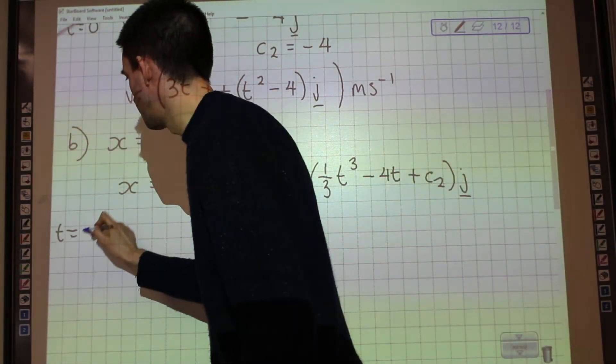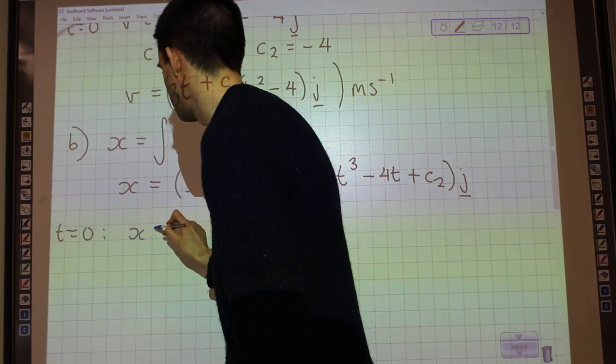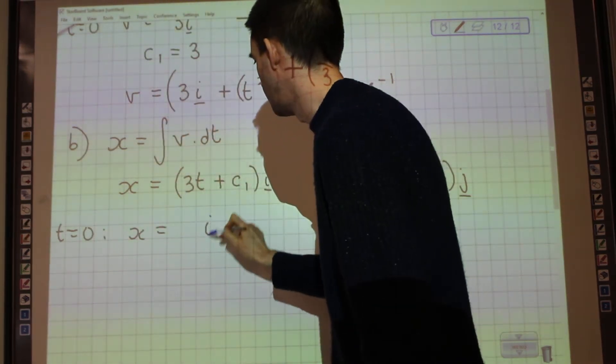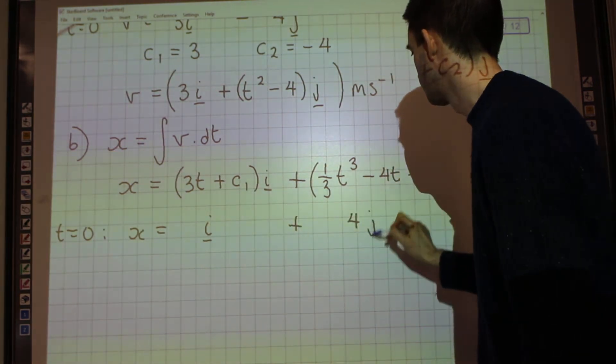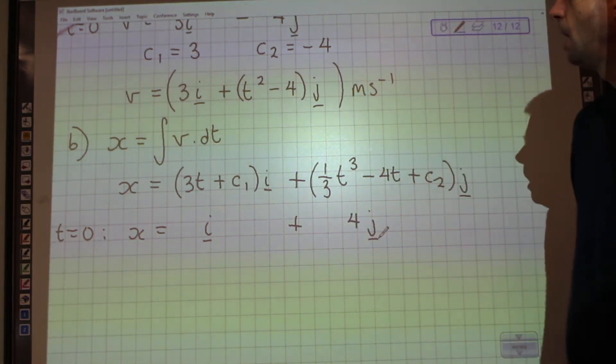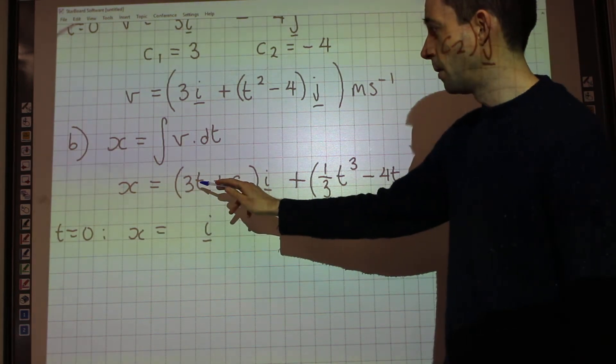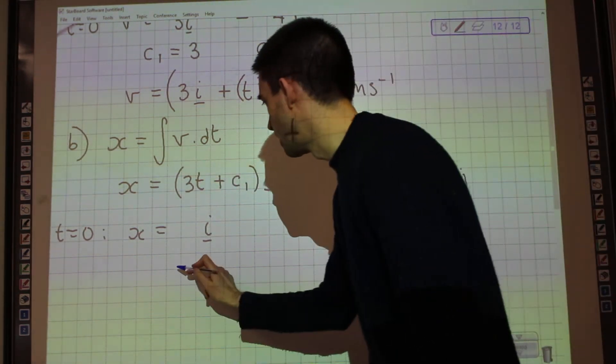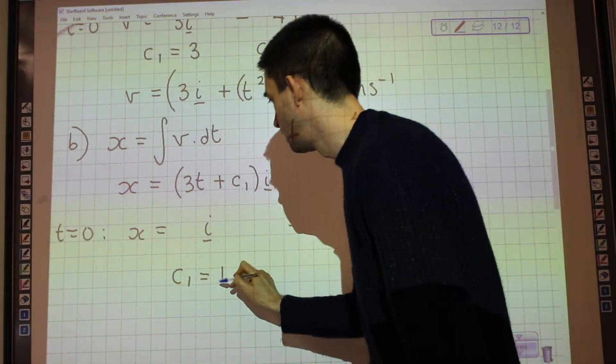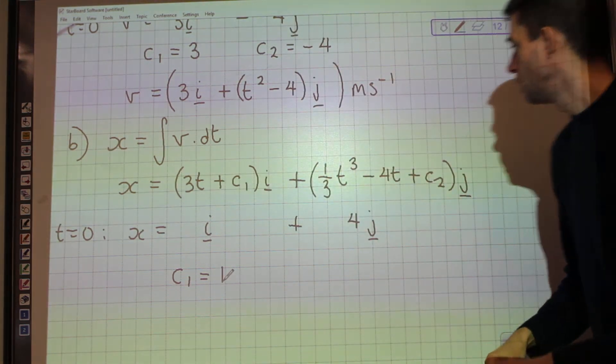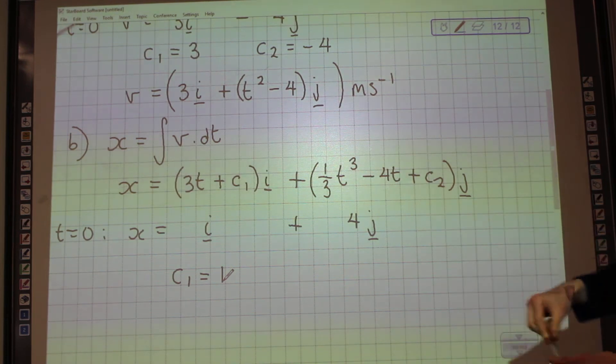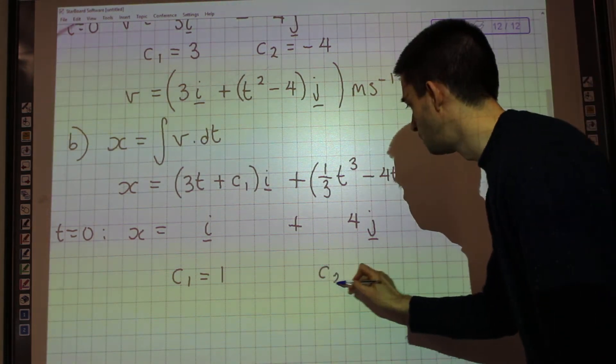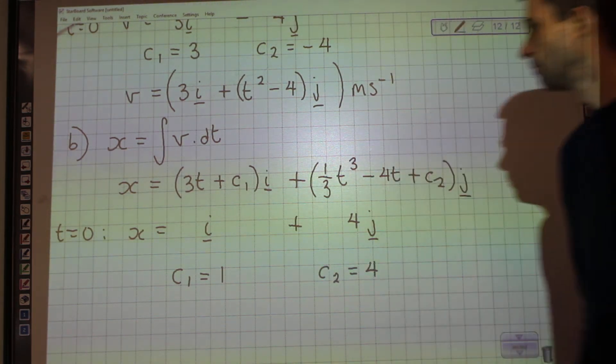So when t is 0, x equals i plus 4j. Substituting 0 in here, I get 0, which tells me that c1 equals 1. Substituting 0 in here, I get that c2 equals 4.